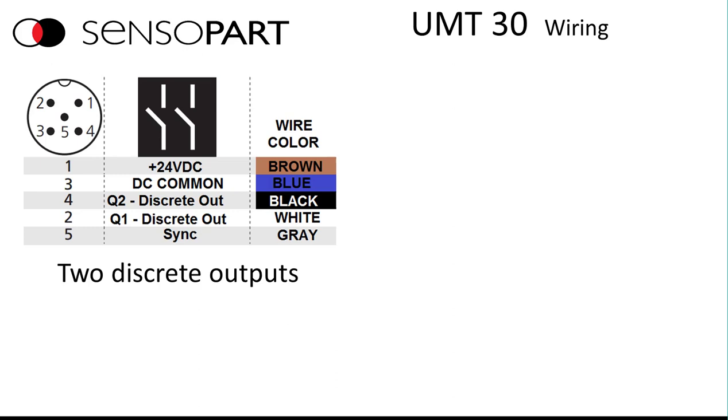This shows how you wire the discrete version. It uses all five pins. The white wire is Q1 and the black wire is Q2, Output 1 and 2.